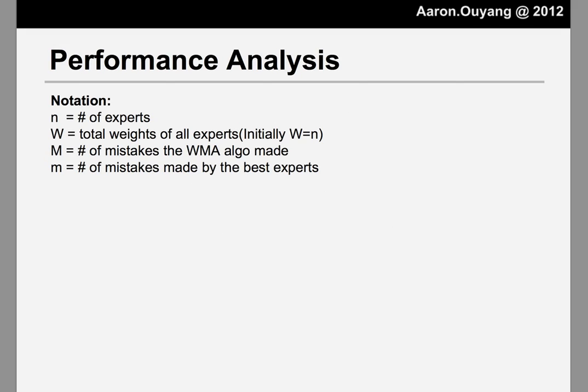So how good is this algorithm? We need an analysis on the performance. Let's say we have n experts total. Since everyone's weights are initially 1, the total weight is initially n. Along a series of predictions, we use M to denote the number of mistakes our algorithm makes and little m to represent the number of mistakes the best expert makes. Our goal is that we don't want our big M to be too far away from the small m.